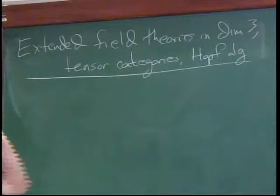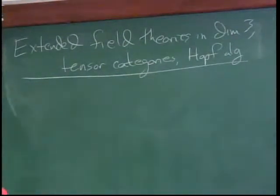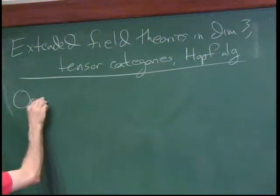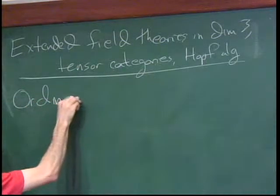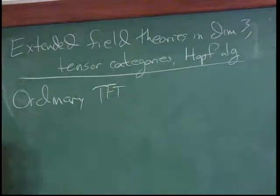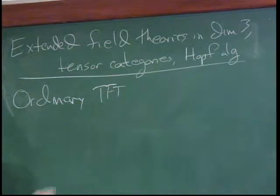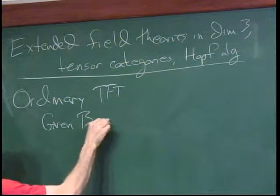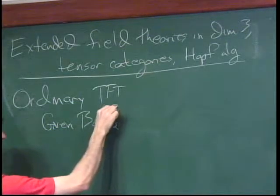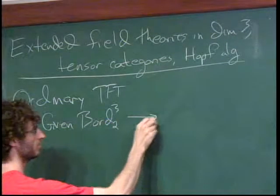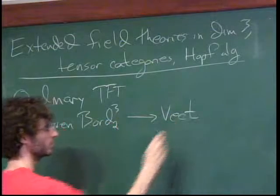We did dimensions one and two, so the next natural thing is to try dimension three. Suppose we just try to do the same thing and look at ordinary three-dimensional TFTs — a functor from the bordism category, whose objects are two-manifolds and morphisms are three-manifolds, to Vect.